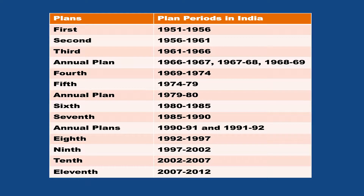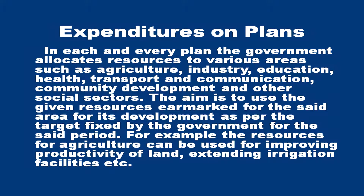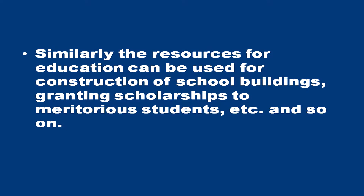In each and every plan, the government allocates resources to various areas such as agriculture, industry, education, health, transport and communication, community development, and other social sectors. The aim is to use the resources earmarked for each area for its development as per the targets fixed by the government for the said period. For example, resources for agriculture can be used for improving productivity of land, extending irrigation facilities, etc. Similarly, resources for education can be used for construction of school buildings, granting scholarships to meritorious students, etc.